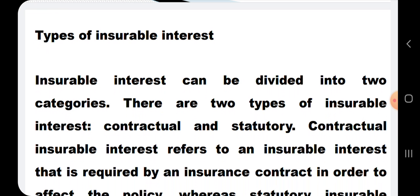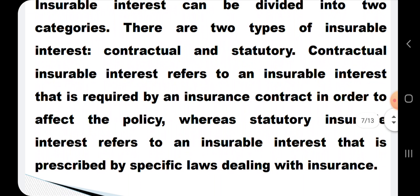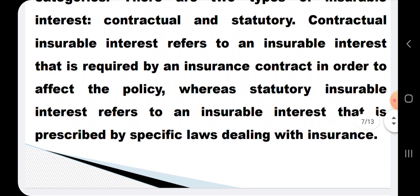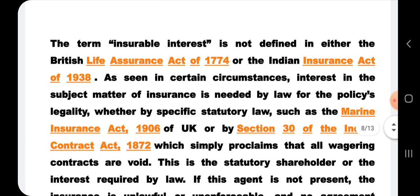Insurable interest can be divided into two categories. The first type is contractual, and the other is statutory. Contractual insurable interest refers to an insurable interest that is required by an insurance contract in order to affect the policy, whereas statutory insurable interest refers to an insurable interest that is prescribed by specific laws dealing with insurance.